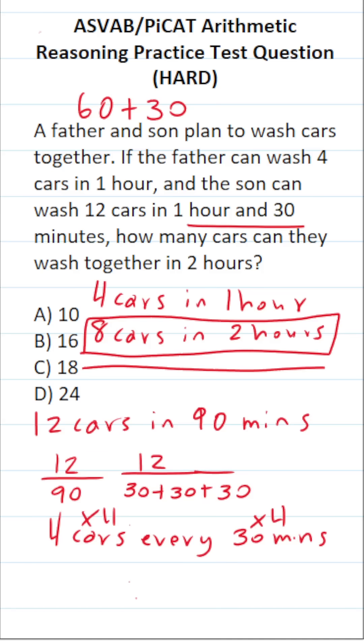30 times four is 120. 120 minutes is the same thing as two hours. So that means he could wash 16 cars in two hours.